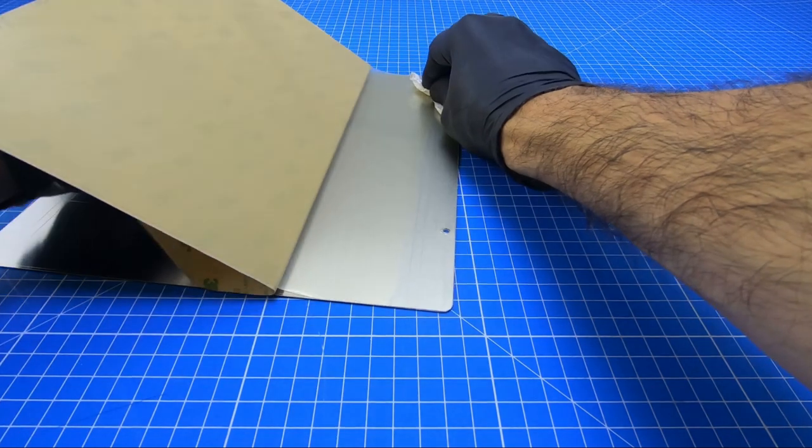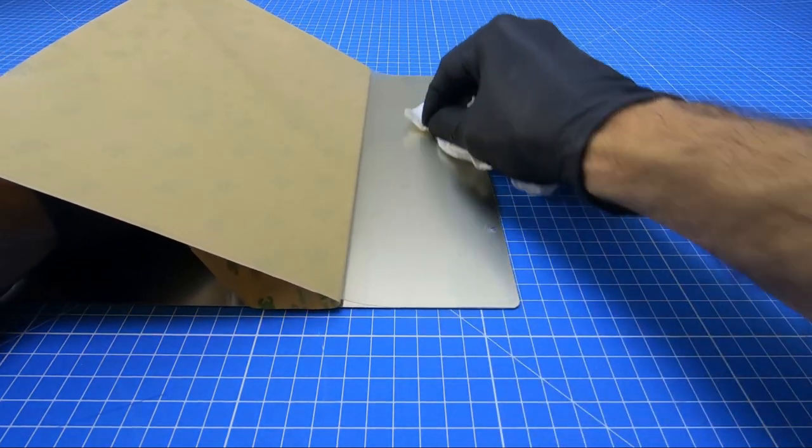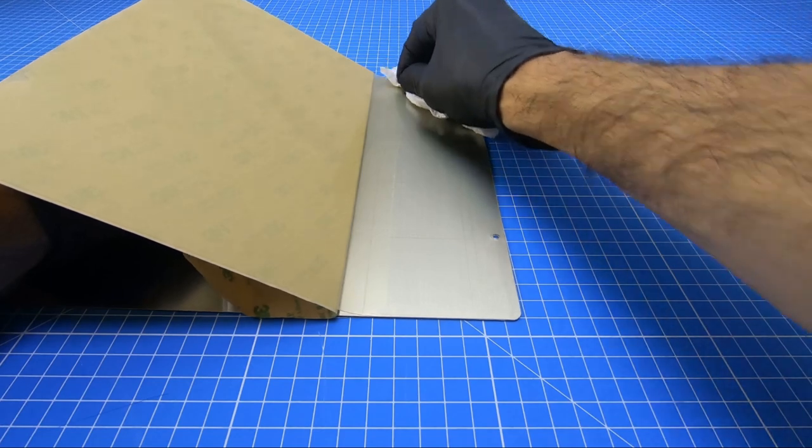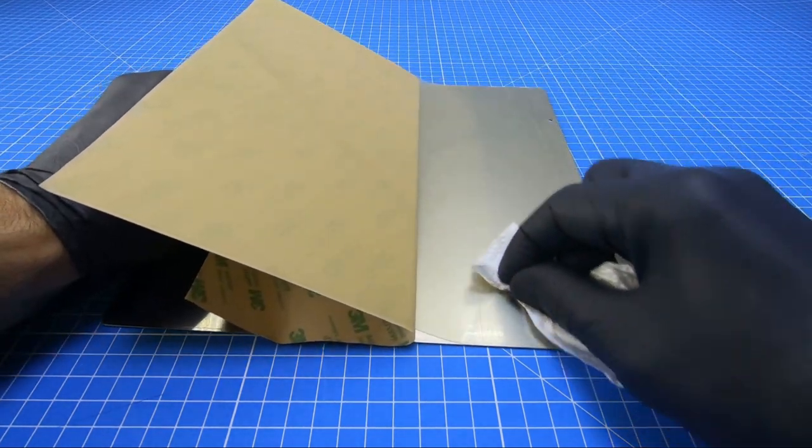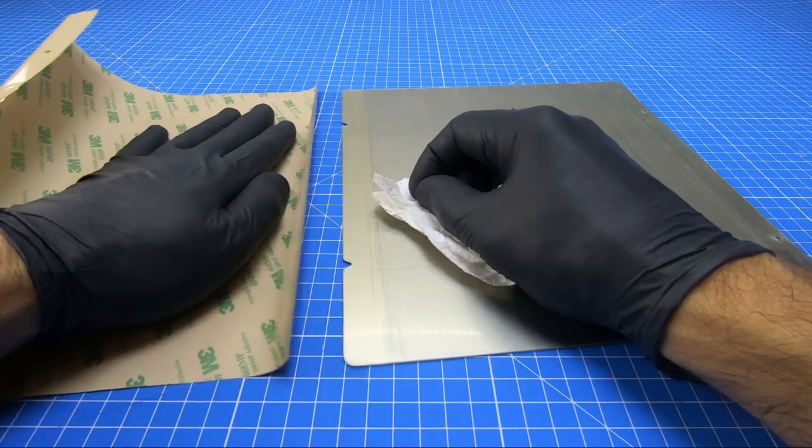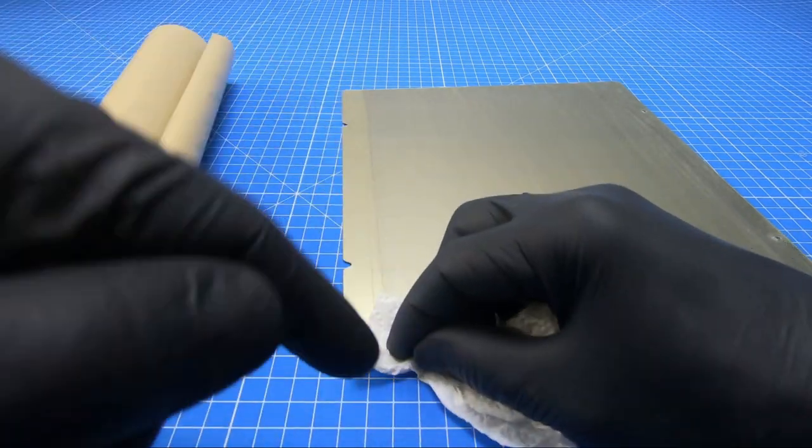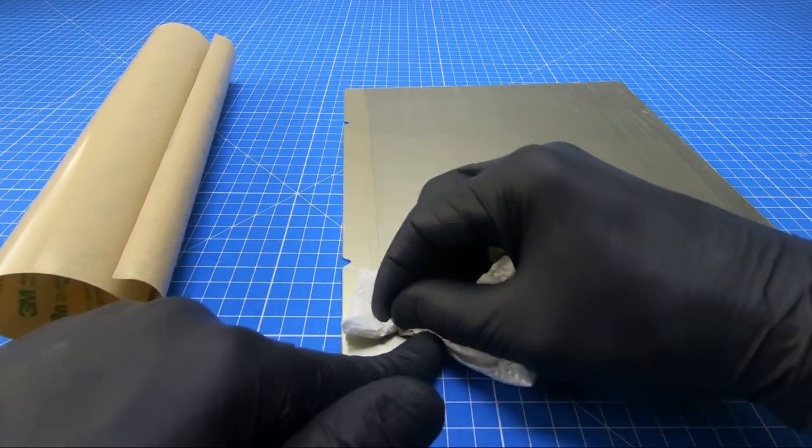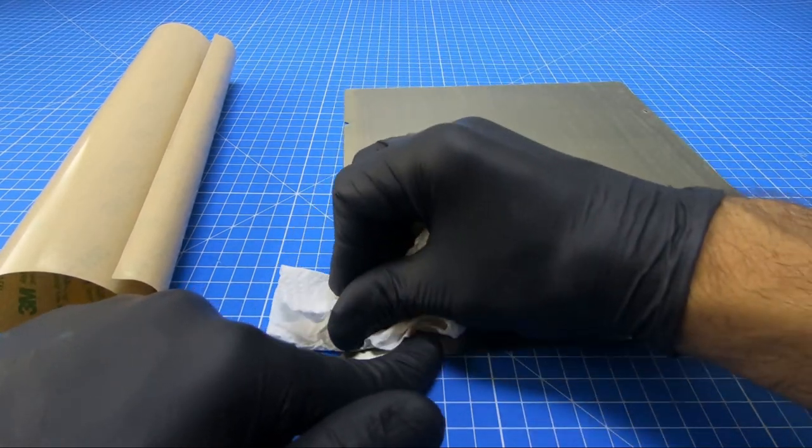Carefully peel off the backing paper no more than five centimeters at a time and work around with the towel. After you've finished peeling, push down the rest and make sure it sticks well.